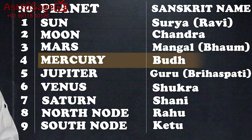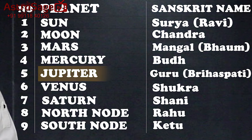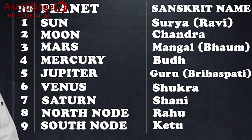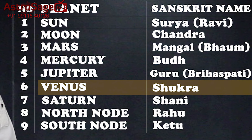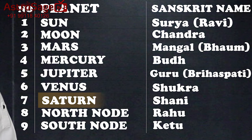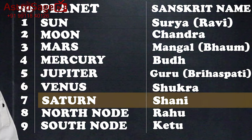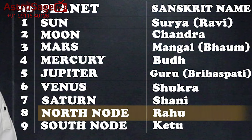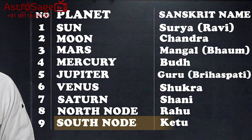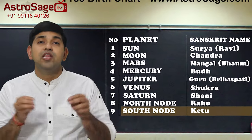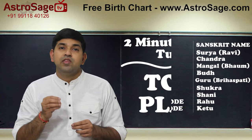4th is Mercury, or Buddha in Sanskrit. 5th is Jupiter, Guru or Brahaspati in Sanskrit. 6th is Venus, that is Shukra in Sanskrit. 7th is Saturn, called Shani in Sanskrit. 8th is North Node, and Rahu in Sanskrit. 9th is South Node, which is called Ketu in Sanskrit.